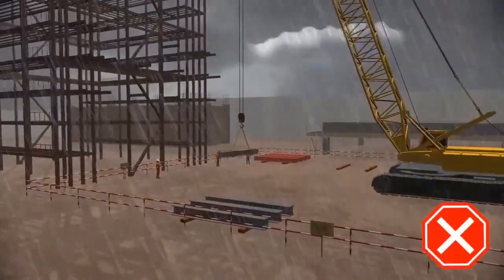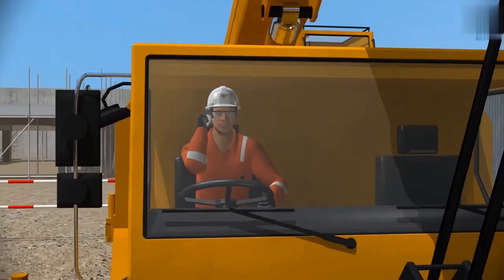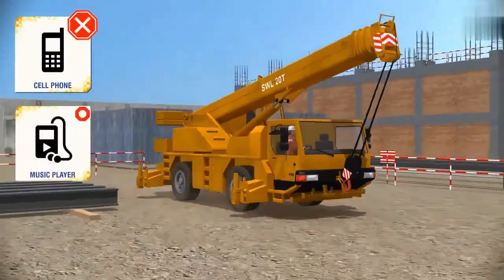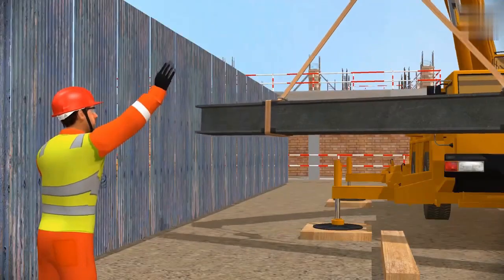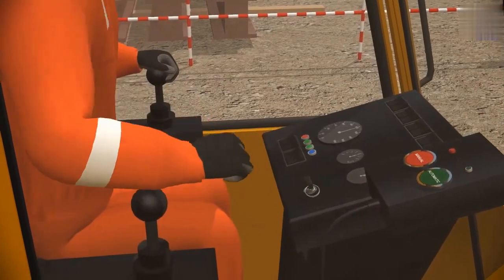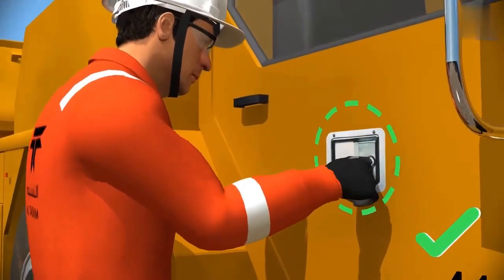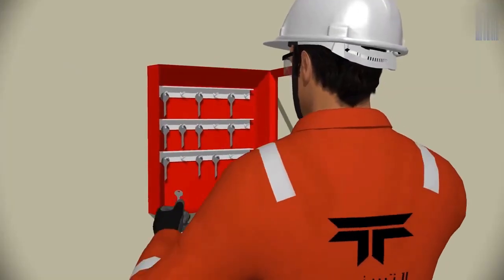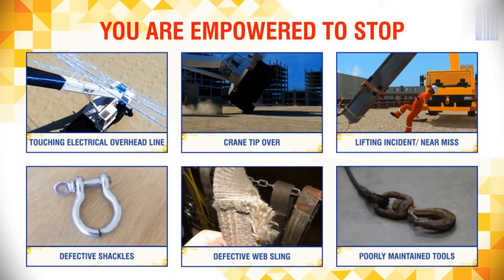Do not use equipment in any extraordinary or adverse conditions such as strong wind, heavy rain, heavy dust, or thick fog. Do not use cell phones or other electronic devices like music players or headphones while operating cranes. If you consume alcohol or drugs, do not conduct any lifting operation. While maintaining the equipment, make sure to turn the engine off, take the keys out, use wheel chocks, and support the hydro locks with a hard object. When the crane is not operating, the operator should lock the cabin and place the key in a safe authorized place. Remember, you are empowered and obligated to stop if any unsafe action or condition is observed. Report unsafe actions and conditions to your supervisor or safety advisor.